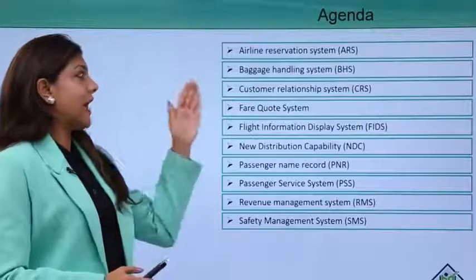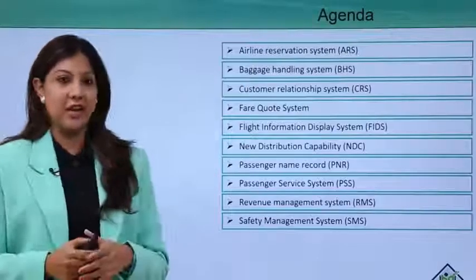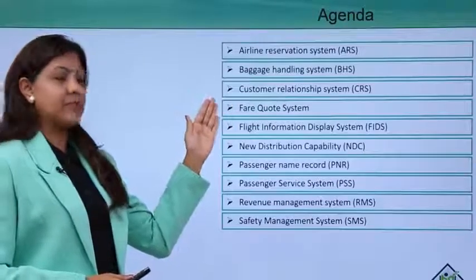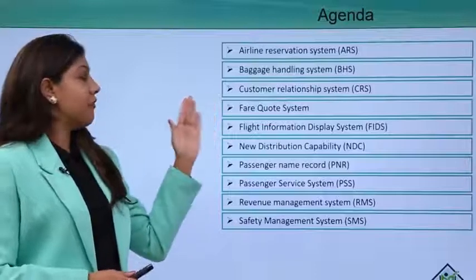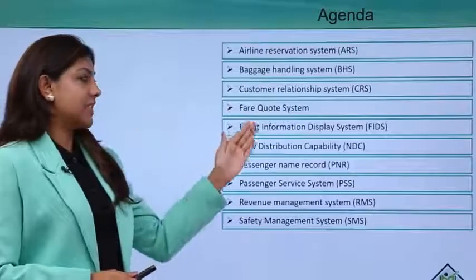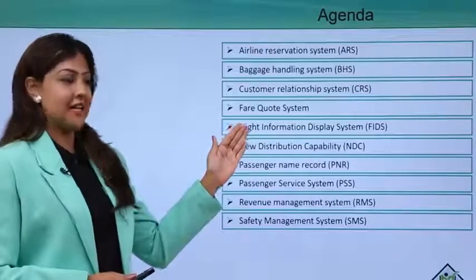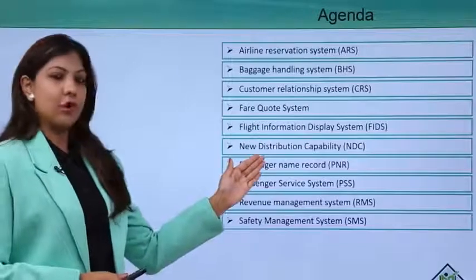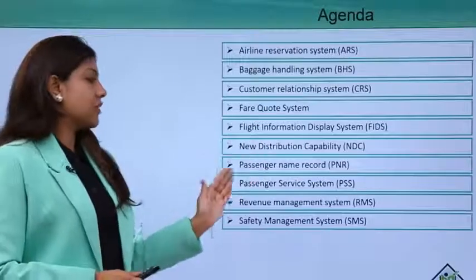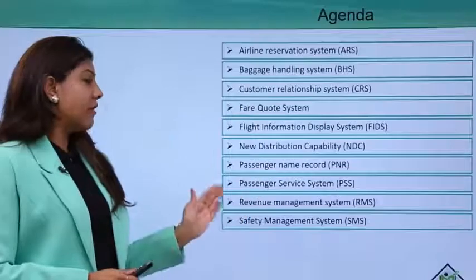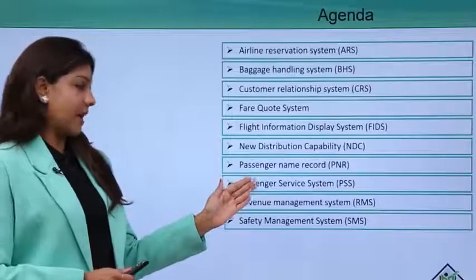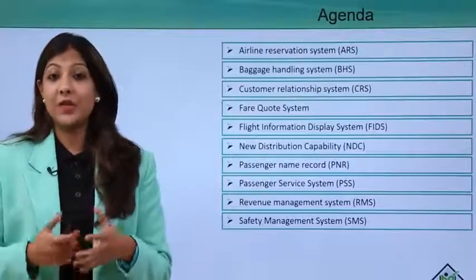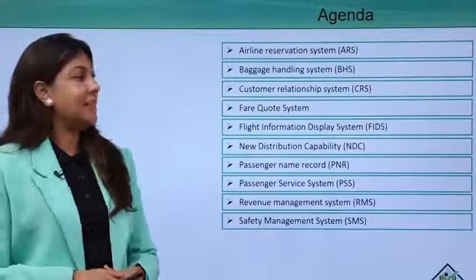Today we are going to talk about the Airline Reservation System (ARS), Baggage Handling System, Customer Relationship System (CRS), Fare Court System, Flight Information Display System (FIDS), New Distribution Capability, Passenger Name Record (PNR), Passenger Service System, Revenue Management System (RMS), and Safety Management System (SMS). We are going to talk about all of these in detail.